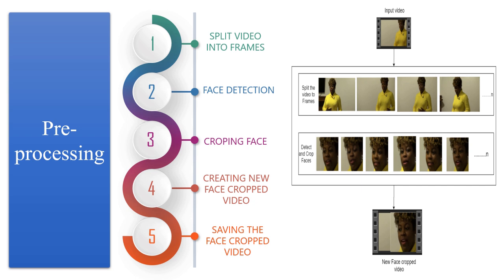A 10-second video at 30 frames per second has 300 frames total, which is computationally very difficult to process at once. Based on our GPU's computational power in the experimental environment, we selected 150 frames as the threshold value and saved only the first 150 frames to the new video. To properly utilize LSTM, we considered frames in sequential order — the first 150 frames — rather than randomly. The newly created video is saved at 30 fps and a resolution of 112×112, then passed to the model for training.